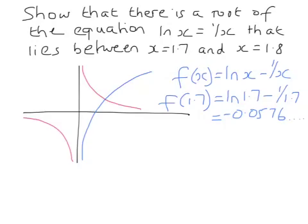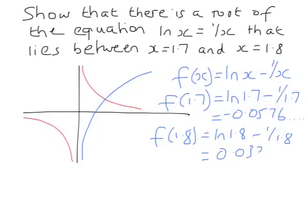That's to 2 significant figures. And then we're going to try f(1.8), so that's ln(1.8) minus 1 over 1.8, and that works out to be 0.0322. So at x equals 1.7, 1 over x is bigger than ln(x). And at x equals 1.8, ln(1.8) is bigger than 1 over 1.8.